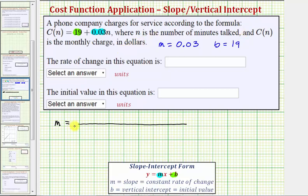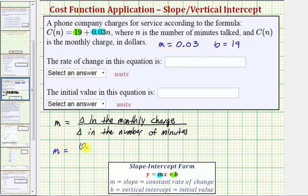So to interpret our slope, let's write the slope as a fraction with the denominator of one. So in our case, we have M equals 0.03 divided by one.